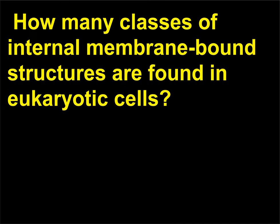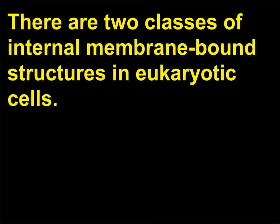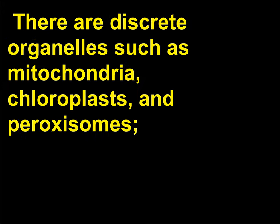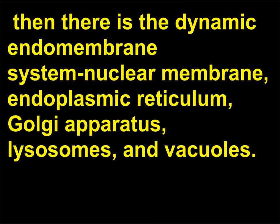How many classes of internal membrane-bound structures are found in eukaryotic cells? There are two classes. First, there are discrete organelles such as mitochondria, chloroplasts, and peroxisomes. Then there is the dynamic endomembrane system: nuclear membrane, endoplasmic reticulum, Golgi apparatus, lysosomes, and vacuoles.